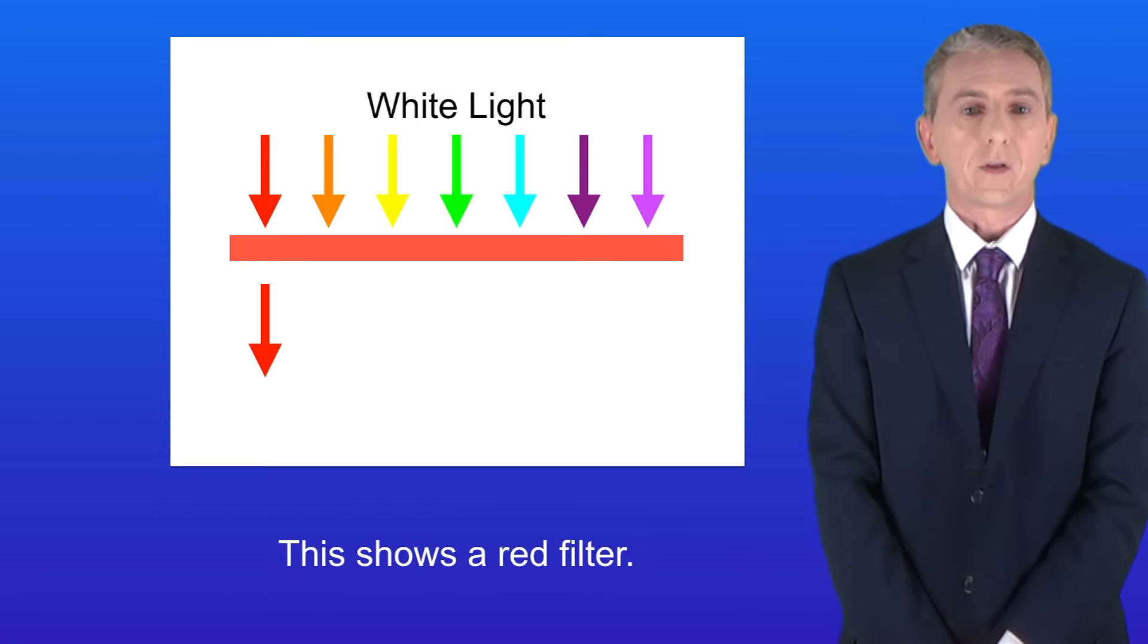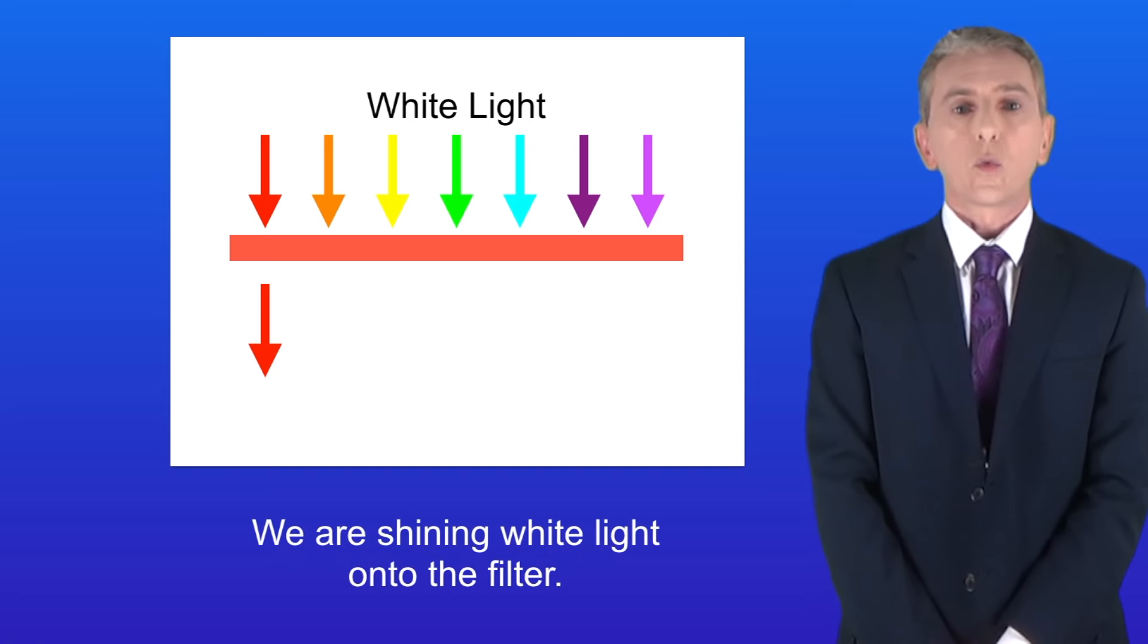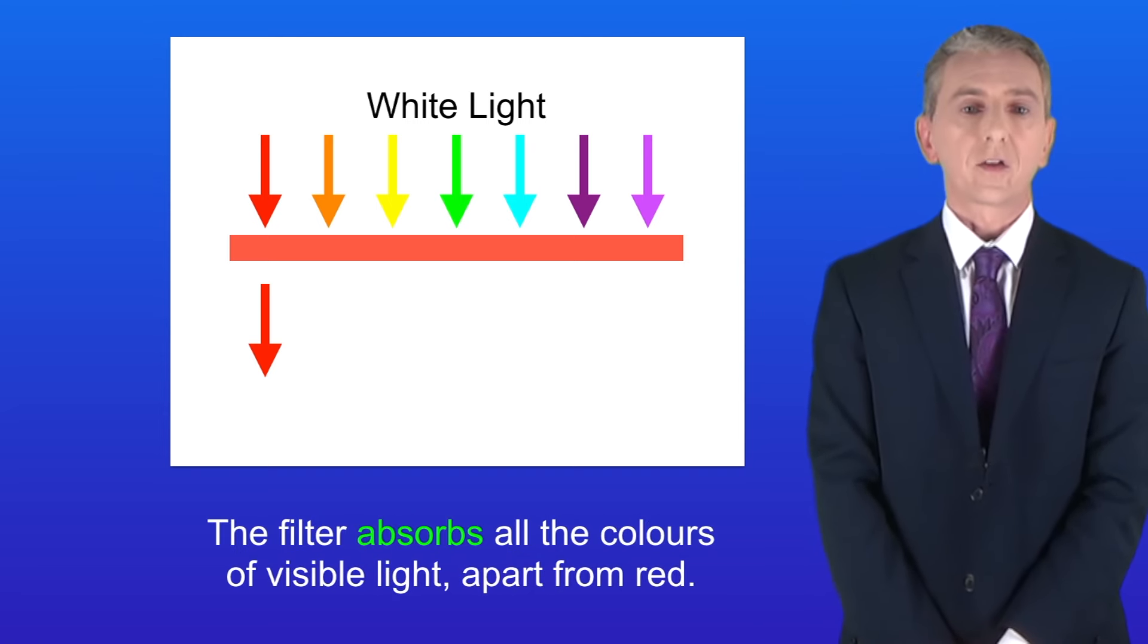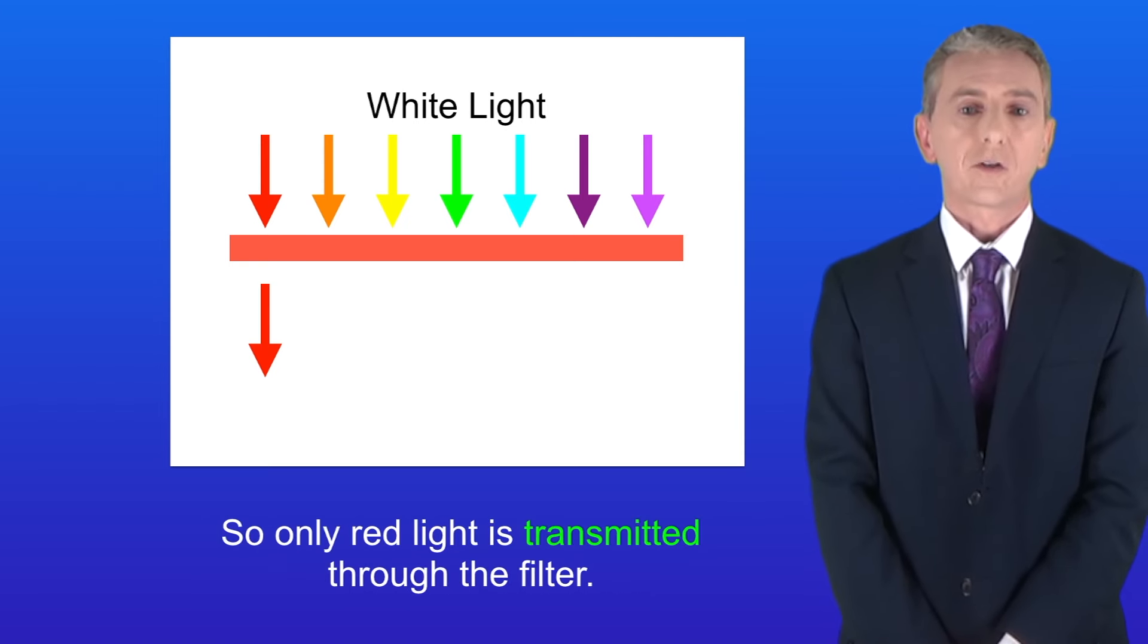So I'm showing you here a red filter. We're shining white light onto the filter. The filter absorbs all the colors of visible light apart from red, so only red light is transmitted through the filter.